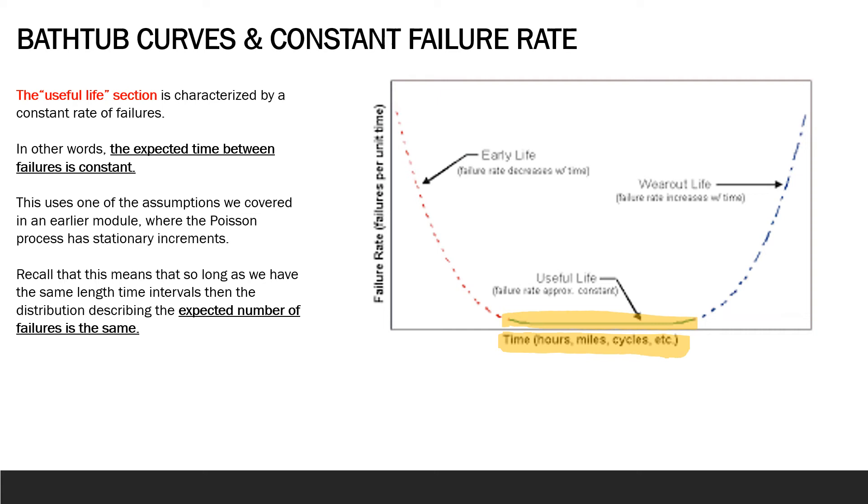And this uses one of the assumptions we covered in an earlier module where the Poisson process has stationary increments. And recall that this just simply means that so long as we have the same length time intervals then the distribution describing the expected number of failures is the same.